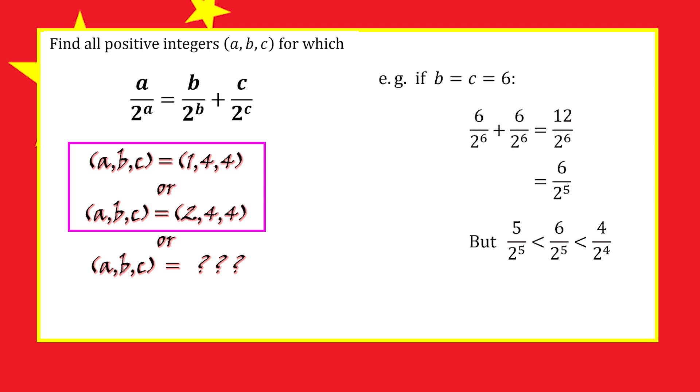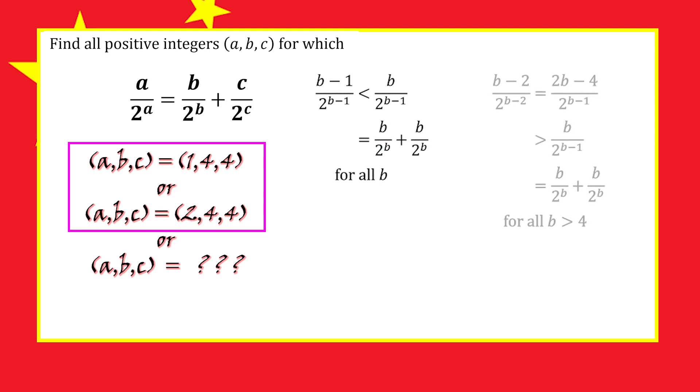The sum has the form b over 2 to the b minus 1, which is always larger than b minus 1 over 2 to the b minus 1. But if we compare it to the next number in the list, b minus 2 over 2 to the b minus 2, that's 2b minus 4 over 2 to the b minus 1.